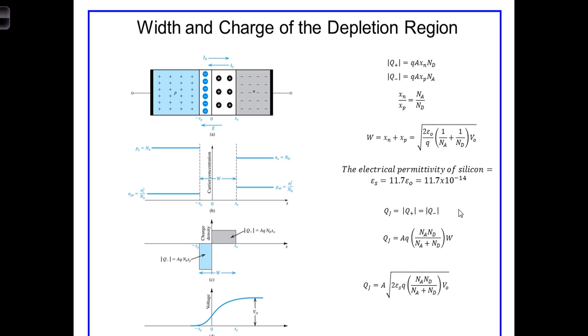Specifically, N-sub-A, the doping concentration on the p-side, is going to be greater than N-sub-D, the doping concentration on the n-side.